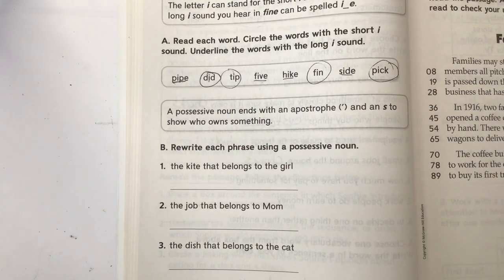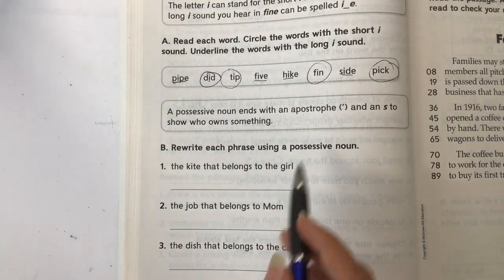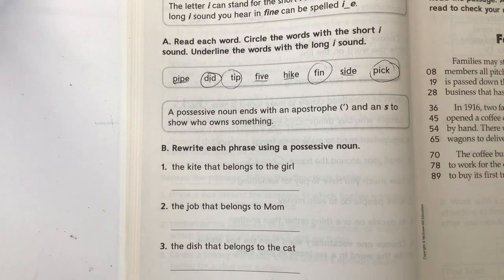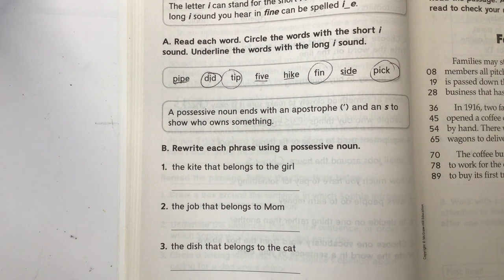A possessive noun ends with an apostrophe - and this little tiny floating comma right there is called an apostrophe - and an S to show who owns something. Rewrite each phrase using a possessive noun.